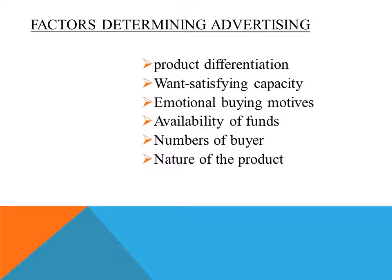The sixth one is Nature of the Product. If the products are homogeneous in nature and also quickly perishable, there is no need to advertise the product, and there is no scope for advertisement.